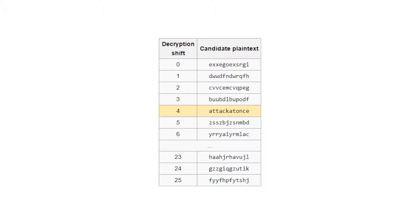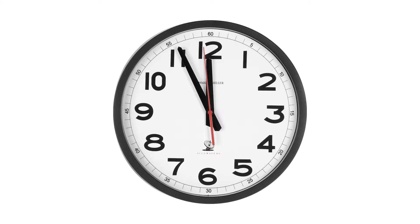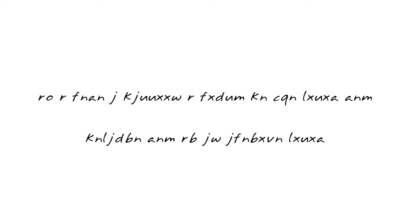We can also simply use brute force if we need to, which comes in handy with shorter messages. This just means we try each combination one by one and see what comes up. With 24 letters in the English alphabet, there are 24 different combinations to try. It doesn't take too long, but I prefer the first method if it's available. So let's add some practicality and throw up an example — I'll encrypt a phrase with a random shift and we'll see if we can crack it.